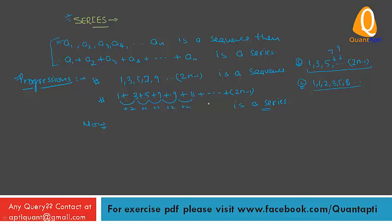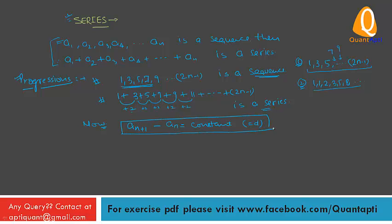A sequence is called an arithmetic progression (AP) if the difference of a term and the previous term is always constant. That is, A(N+1) minus AN equals a constant, which is denoted by small d, called the common difference.